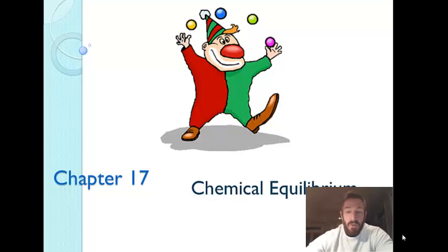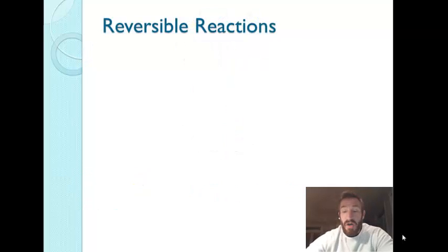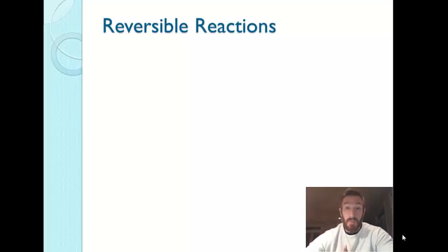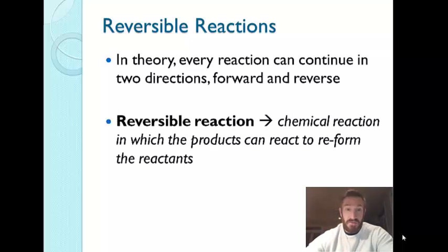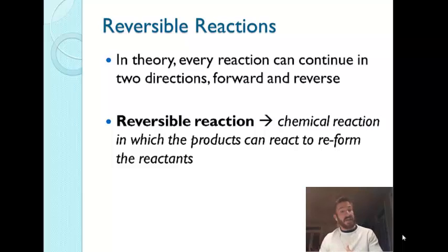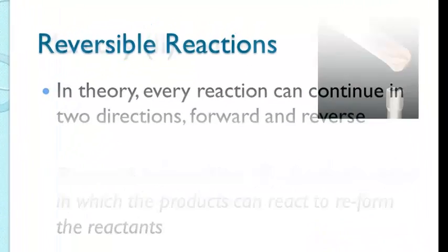Today we're going to begin our study of chemical equilibrium. To have equilibrium, you have to have what is called a reversible reaction. In theory, every reaction can continue in two directions, both forward and reverse. A reversible chemical reaction is one in which the products can go back and reform the reactants.